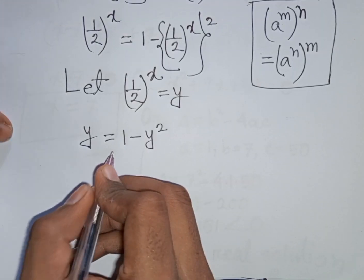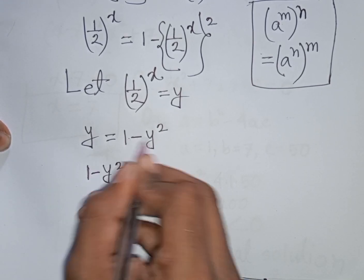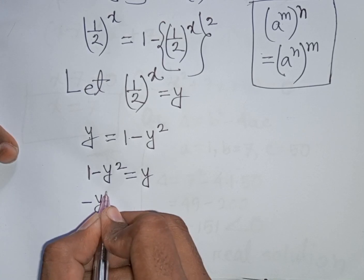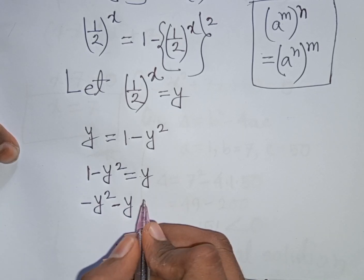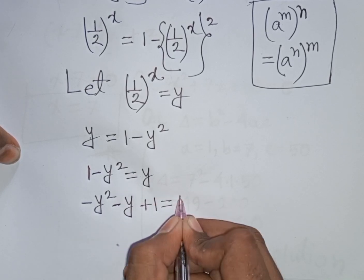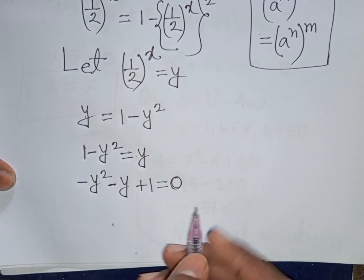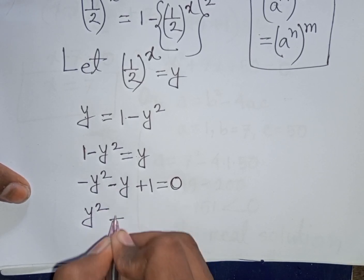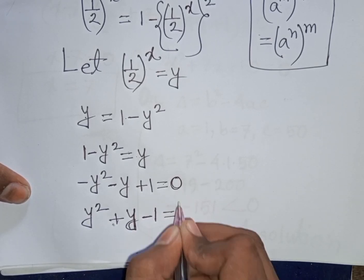Writing 1 minus y² equals y, rearranging: minus y² plus y minus 1 equals 0. Multiplying both sides by minus 1 gives y² minus y plus 1 minus 1 equals 0, that is y² minus y minus 1 equals 0.